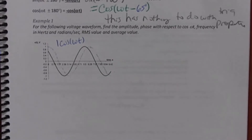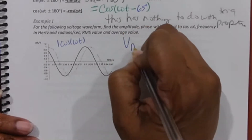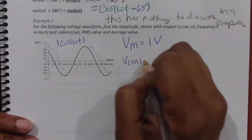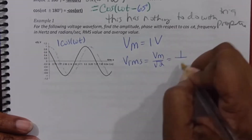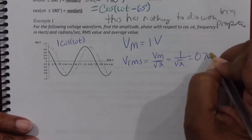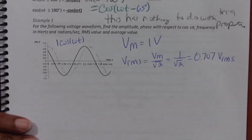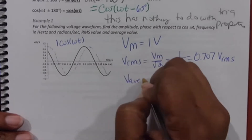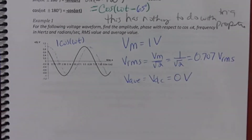We only have five minutes left so let's work through this. First, the amplitude for both signals is one volt. The RMS value is the magnitude over root two, which is 1/√2, or approximately 0.707 V_rms. The signal is not shifted on the vertical axis, so the average or DC value is zero volts.